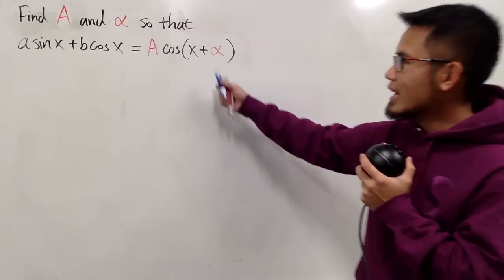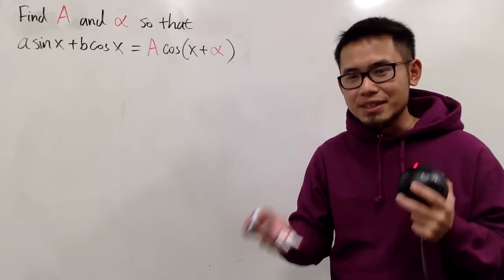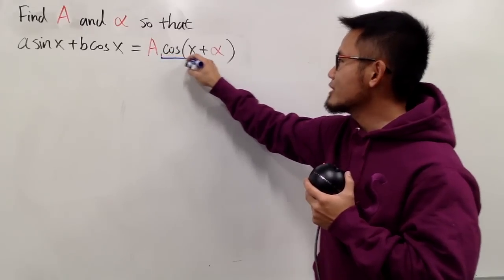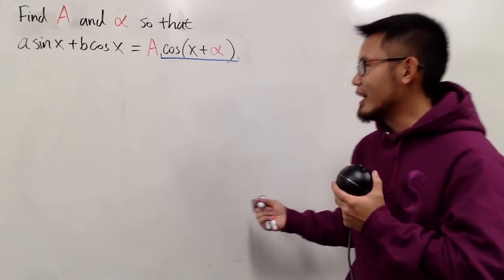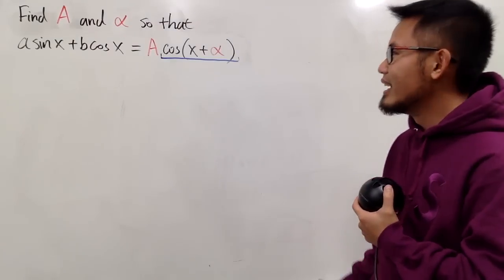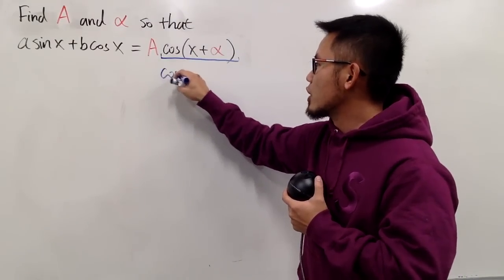We see that we have an angle sum right here, x plus alpha. And hopefully, you guys have seen my videos on how to derive the angle sum formula for cosine. Maybe if you haven't, it's okay, just go watch the videos in the description.